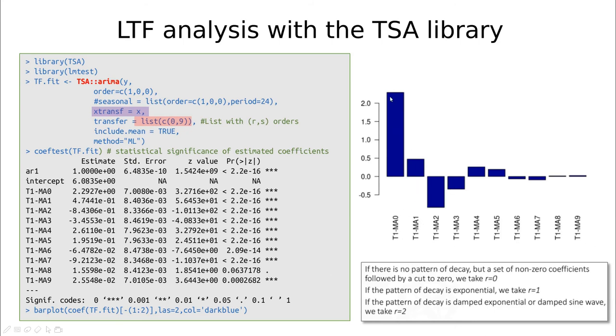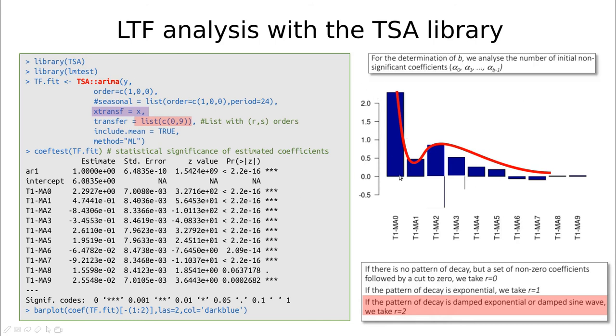If we don't see any pattern, imagine we have only one bar and the rest of them are zero or non-significant, in that case we would say that r equals zero. If we have something like an exponential, something that decays smoothly, then r equals one. If we have something like this which is a kind of sinusoidal with damping, or maybe this situation in which we have this kind of two length scales or decaying scales or something like that, in that case we would say that r is equal to two. So this is very exploratory, but you can see that the analysis of all the coefficients is giving us a lot of information.